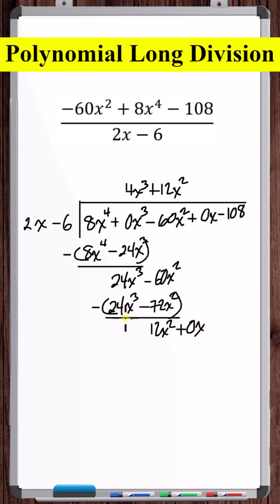Bring down the 0x. 12x squared divided by 2x is 6x. Multiply 6x by the divisor. Subtract these two terms.